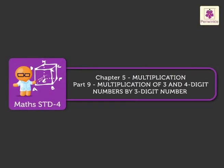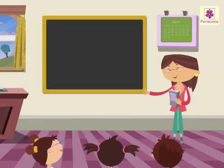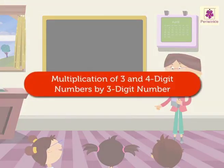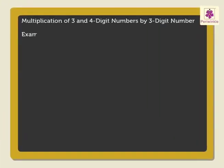Multiplication of 3 and 4 digit numbers by a 3 digit number. Today, let us learn the multiplication of 3 and 4 digit numbers by a 3 digit number. Let us begin with the multiplication of 359 and 243. We can divide the whole process into 4 steps.